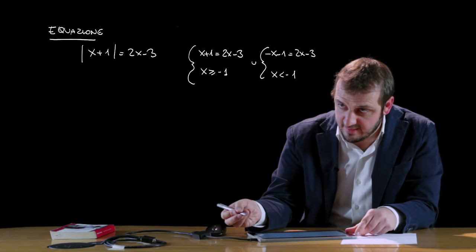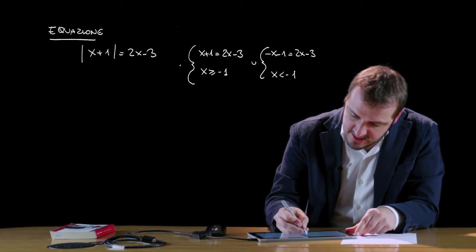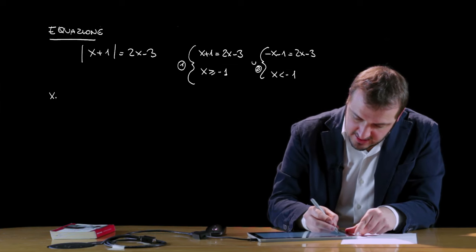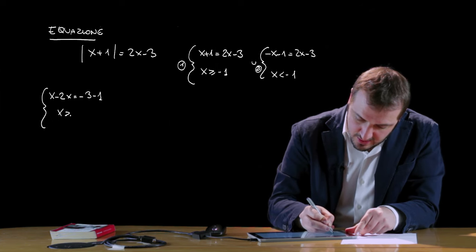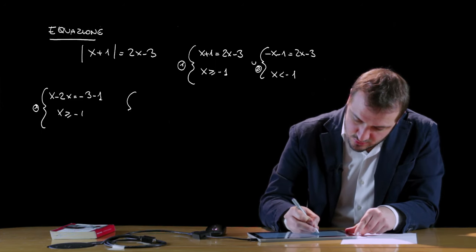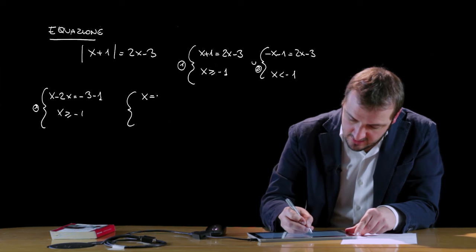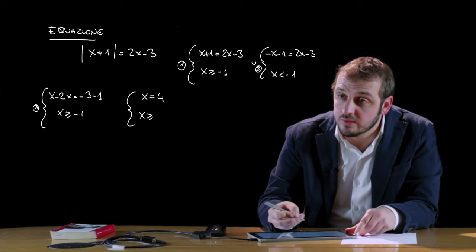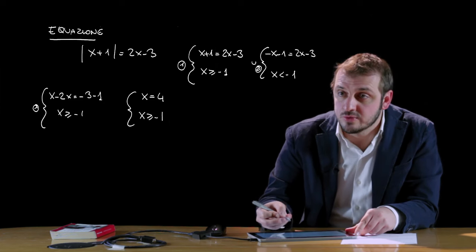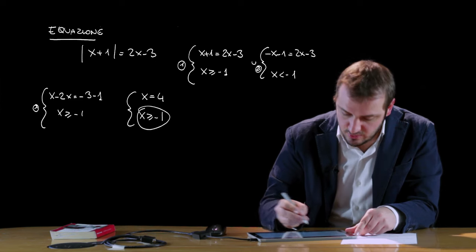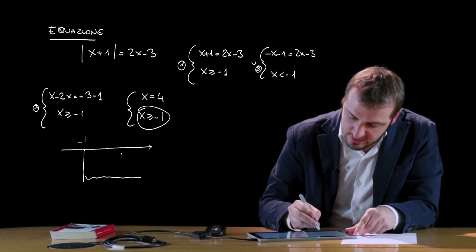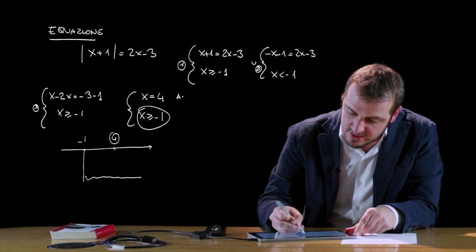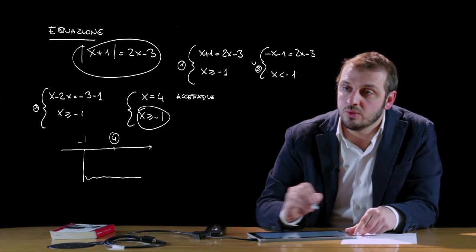Dobbiamo quindi portare avanti entrambi questi sistemi. Il primo sistema ci darà come risultato: x - 2x = -3 - 1, con x maggiore o uguale di meno 1. Quindi la soluzione sarà -x = -4, quindi x = 4. Dobbiamo verificare se il valore 4 ricade nel dominio in cui dobbiamo studiare questa equazione, ossia x maggiore o uguale di meno 1. Ragionando con la retta orientata, il punto 4 ricade esattamente in questa zona e quindi è un valore assolutamente accettabile, che farà parte dell'insieme delle soluzioni dell'equazione con il modulo.